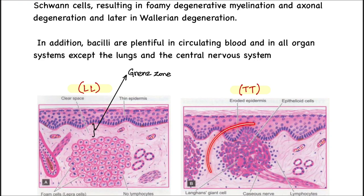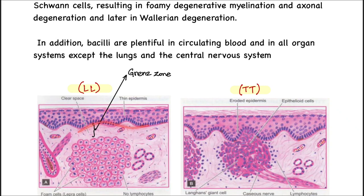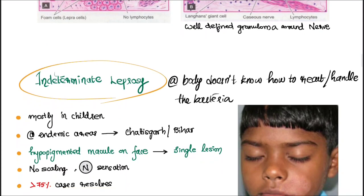These are diagrammatic representations of the histopathology: LL (lepromatous leprosy) with worse prognosis and TT (tuberculoid) with good prognosis. In LL, there is a clear space between the epidermal layer and the collection of foam cells — this clear space is called the Grenz zone. In TT, there is a well-defined granuloma around the nerve formed with epithelial cells, and the epidermal layer is invaded with no Grenz zone.